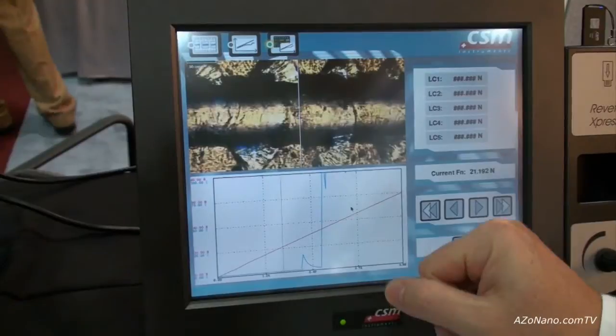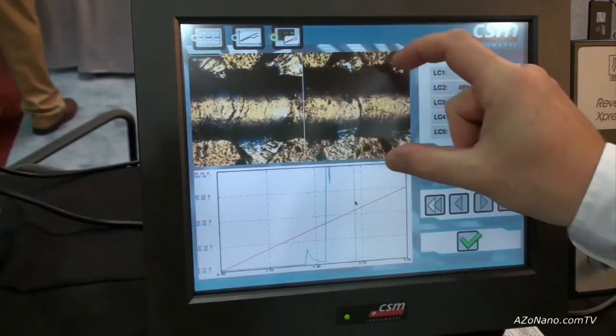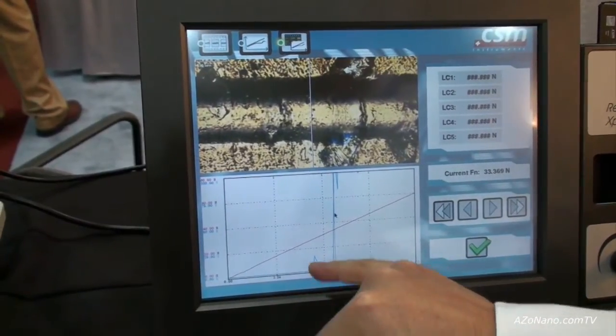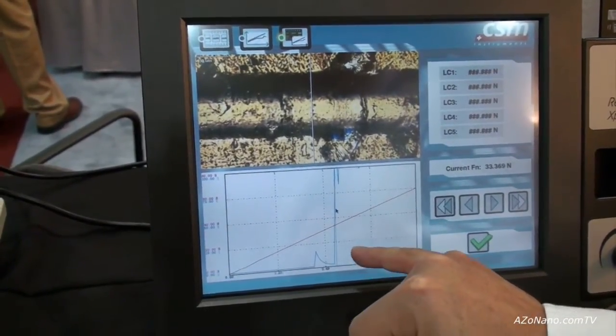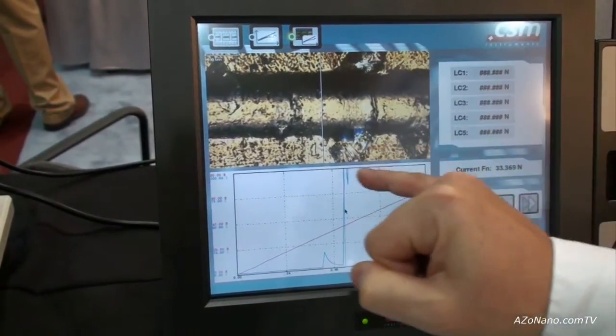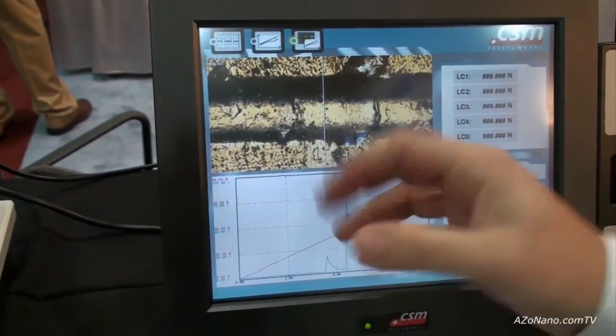So I can actually search along here and look for failure. Here we can see spallation along the side of the scratch and what's interesting is we see that the onset of acoustic emission signal correlates with some deformations on the side of the scratch stripe where we start to fail the coating.